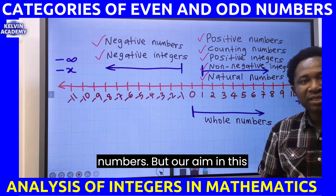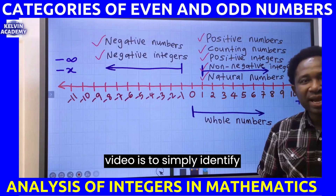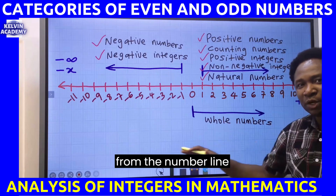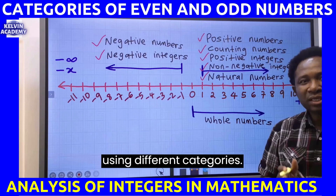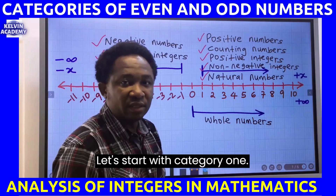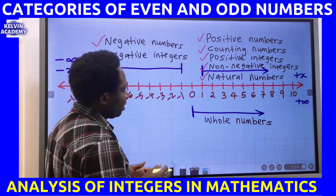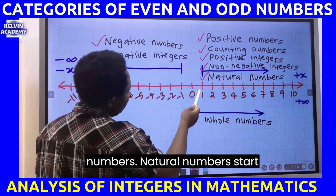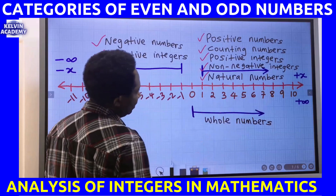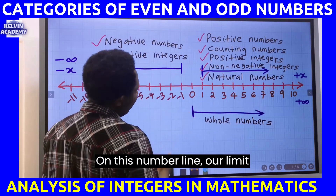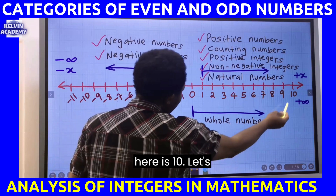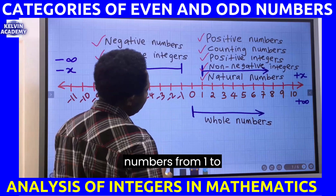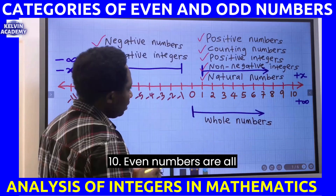Our aim in this video is to simply identify even numbers and odd numbers from the number line using different categories. Let's start with Category One. Category One will be natural numbers. Natural numbers start from one to infinity. On this number line our limit is ten, so let's identify even and odd numbers from one to ten.